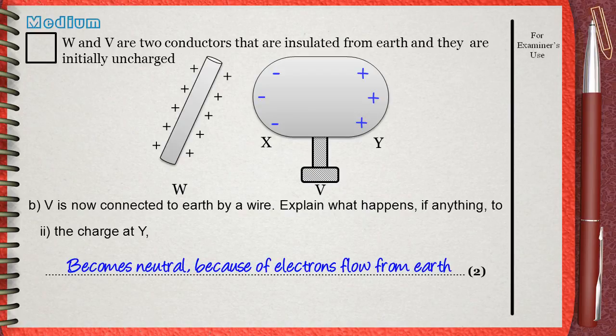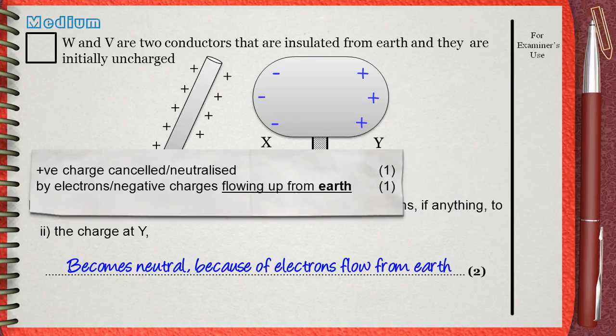Because of the electron flow from Earth. The mark scheme awards two marks for this question. Positive charges cancelled, or you can say neutralized. And this is what we said here, becomes neutral.